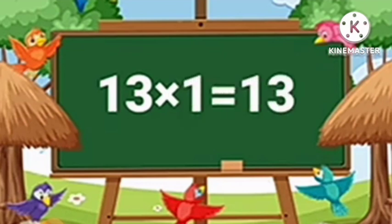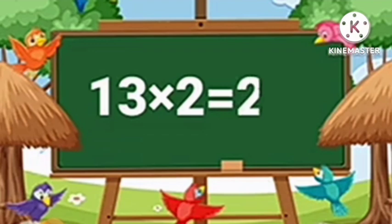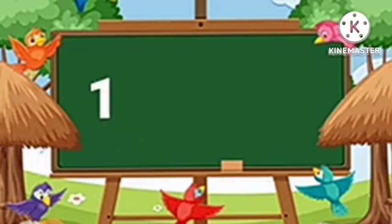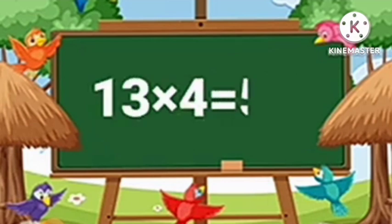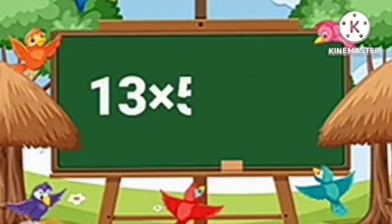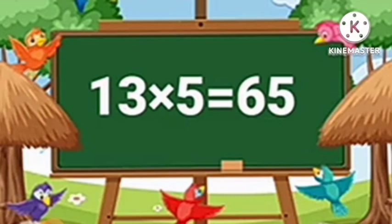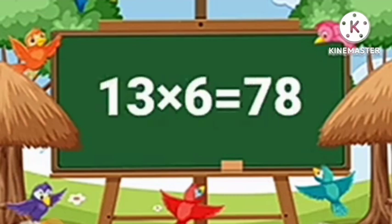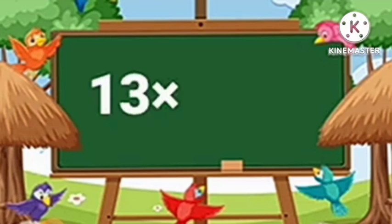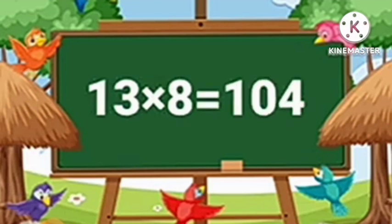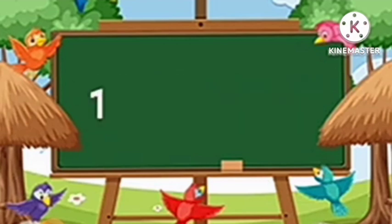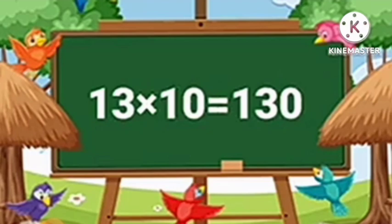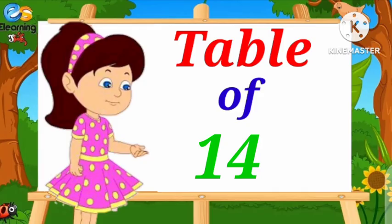Table of Thirteen. Thirteen-One's are Thirteen. Thirteen-Two's are Twenty-Six. Thirteen-Three's are Thirty-Nine. Thirteen-Four's are Fifty-Two. Thirteen-Five's are Sixty-Five. Thirteen-Six's are Seventy-Eight. Thirteen-Seven's are Ninety-One. Thirteen-Eight's are One Hundred and Four. Thirteen-Nine's are One Hundred and Seventeen. Thirteen-Ten's are One Hundred and Thirty.